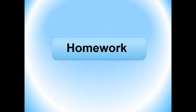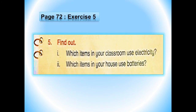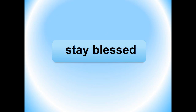Now I have a homework for you. Your homework is exercise number 5 on page number 72. Number 1: which items in your classroom use electricity? And number 2: which items in your house use batteries? You will find out these items and make a list in your notebooks. Here our exercises of unit number 8 are completed. I hope you are able to solve these exercises in your book easily. Allah Hafiz and stay blessed.